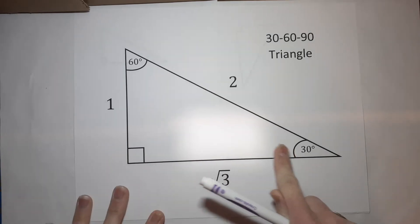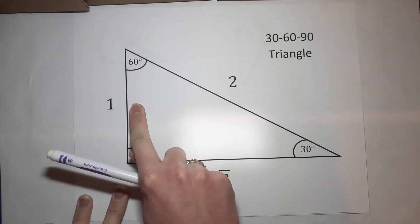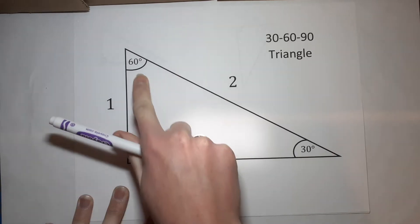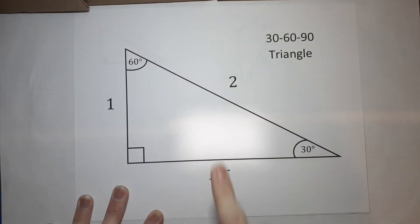This side across from the 30 degrees, it's going to be the shortest side is one. The side across from the 60 degrees is going to be the square root of three.